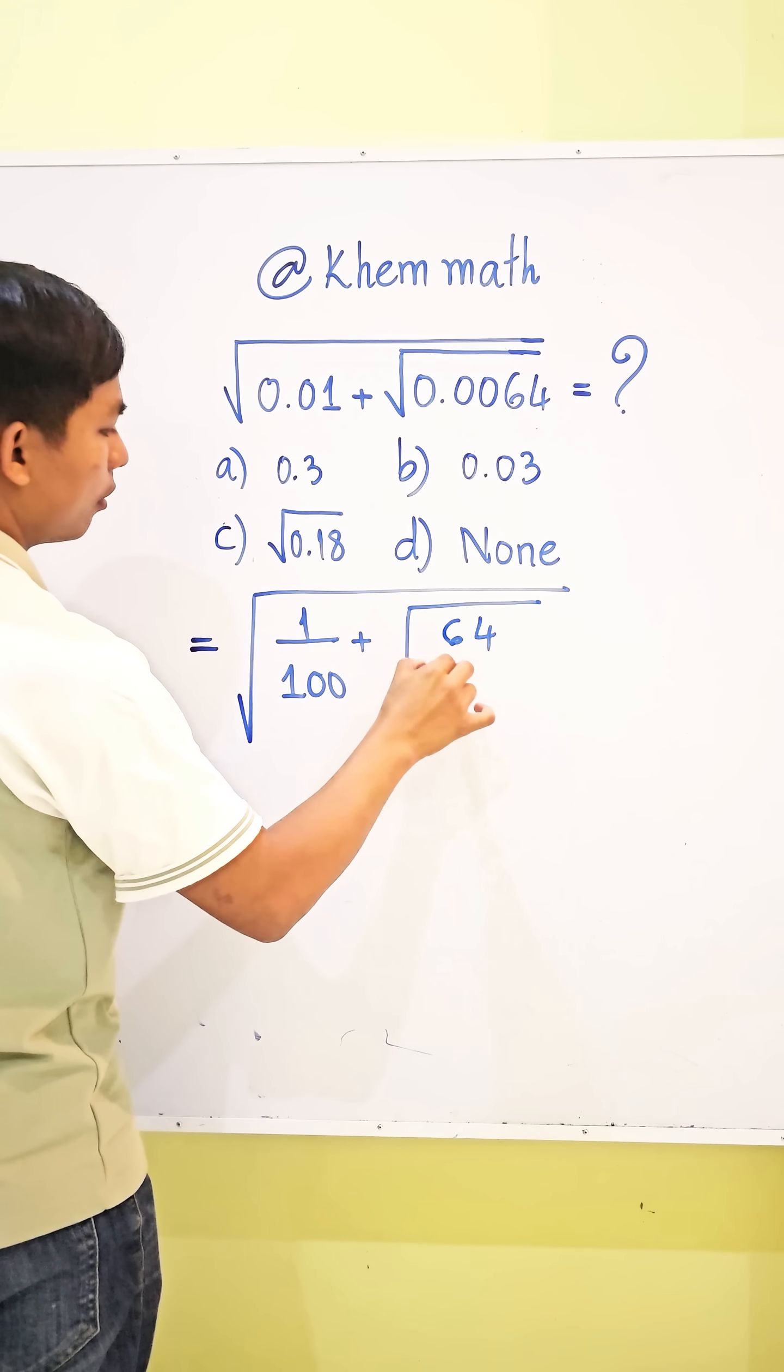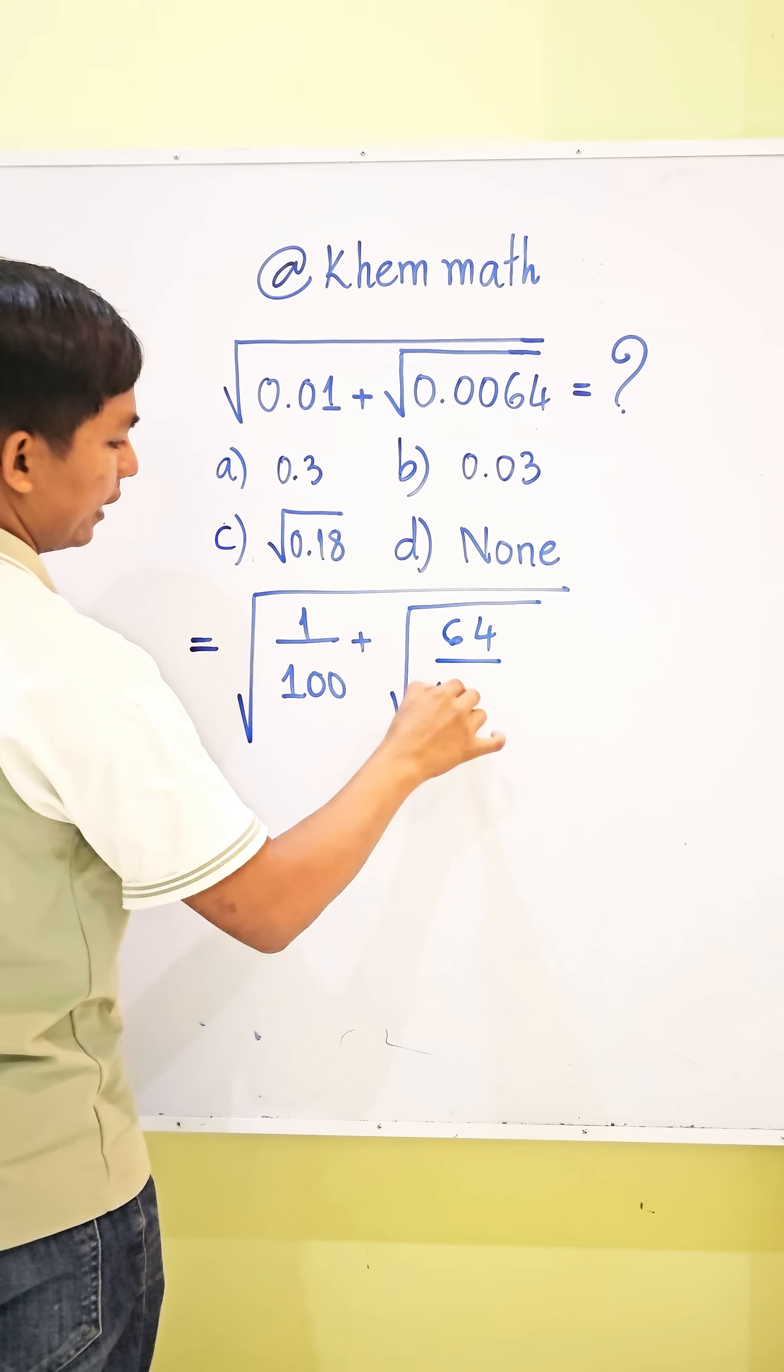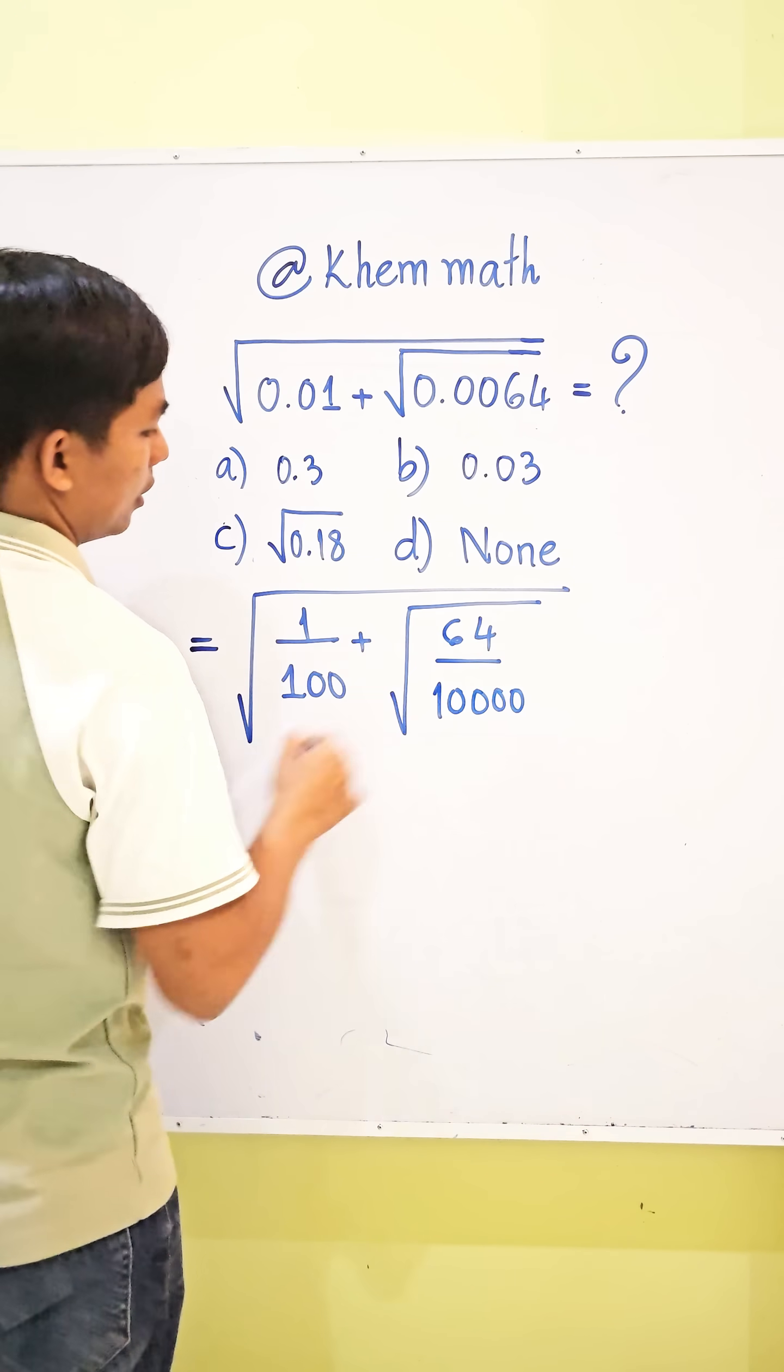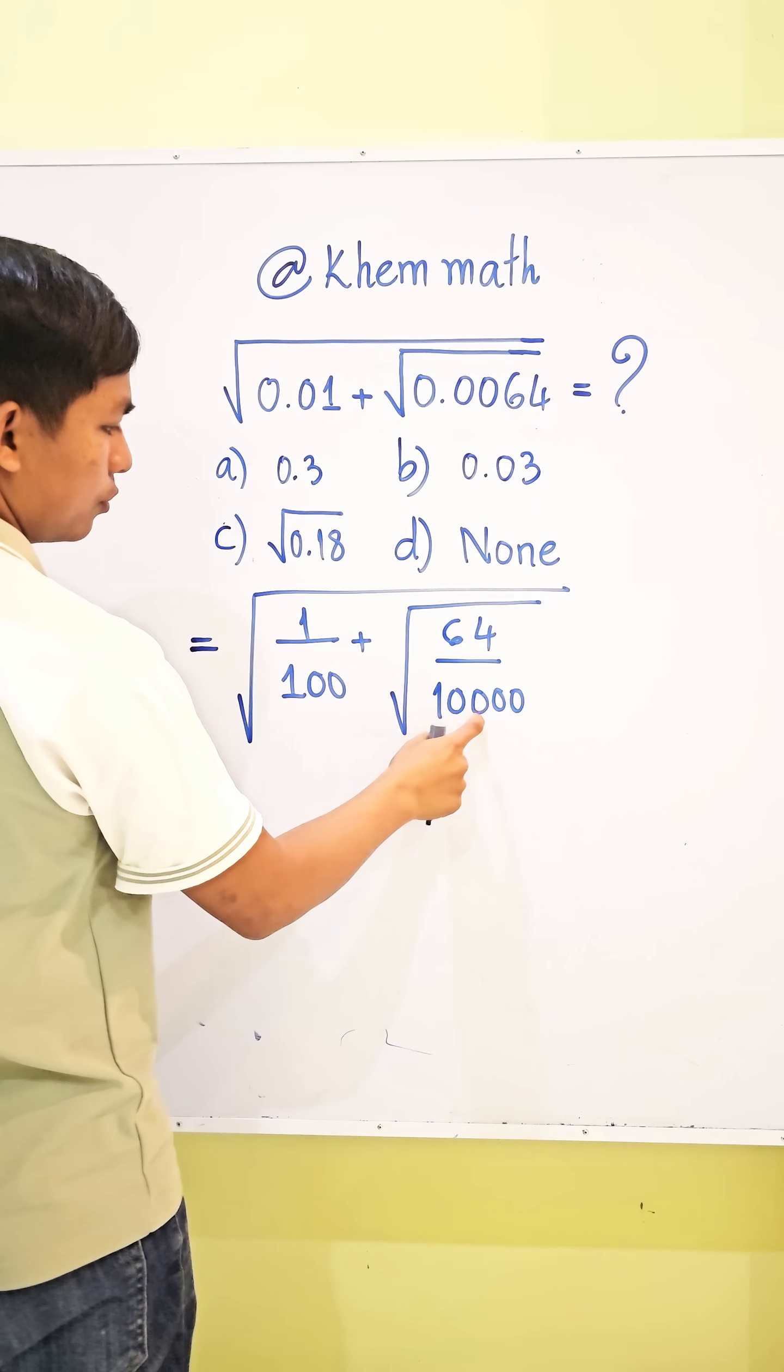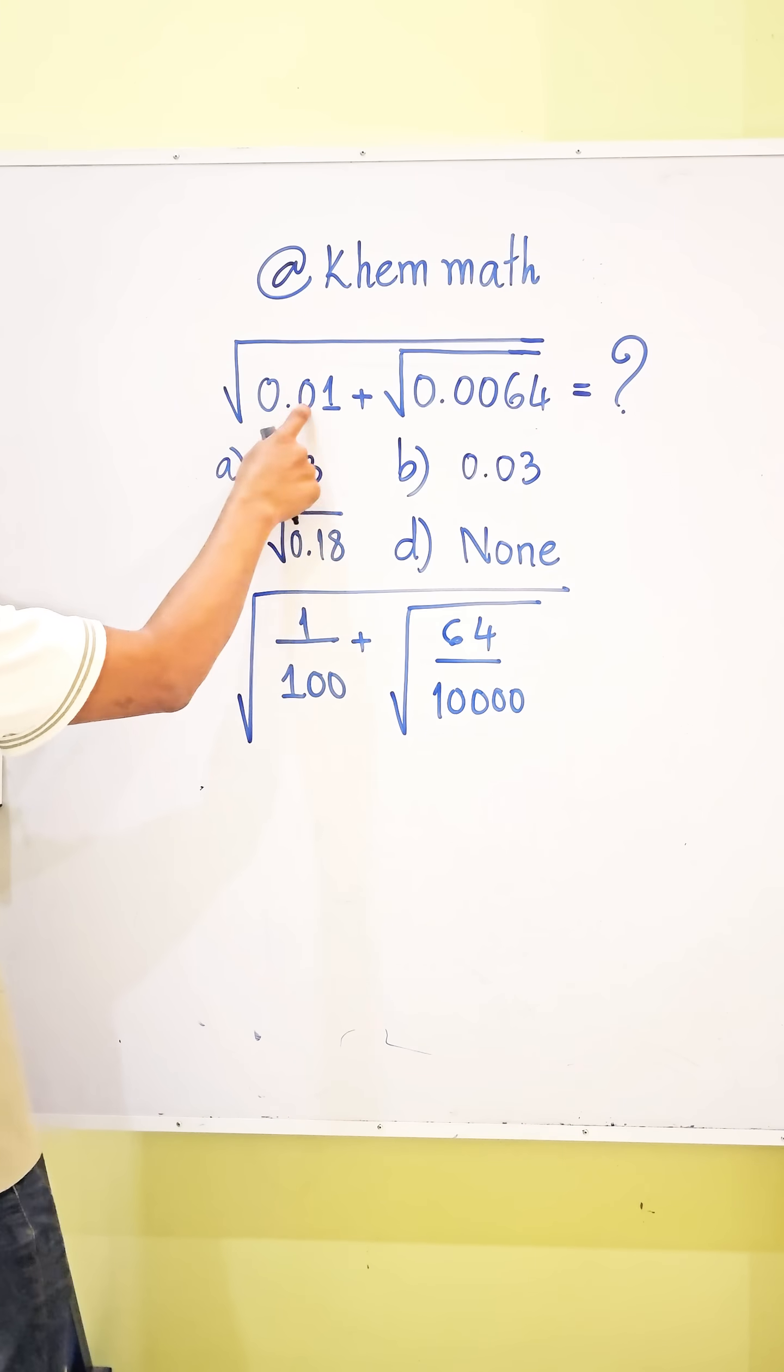64 divided by 10,000. Okay, we have one, two, three, four decimal places, so one, two, three, four.